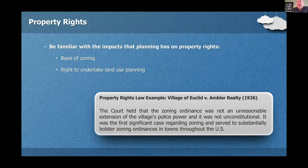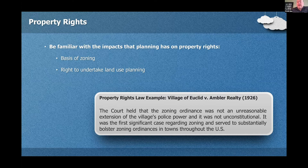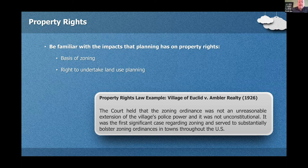As planners, we're in a very powerful position when it comes to private property and our impact upon how people can use their land. Sometimes that can make for some very uncomfortable or confrontational situations. This is a case — Village of Euclid v. Ambler Realty — that if you can quote it, can sometimes get you out of interesting situations right away. The court held that the zoning ordinance was not an unreasonable extension of the village's police power and therefore was not unconstitutional. Basically, it was the first case that gave us the power to zone.